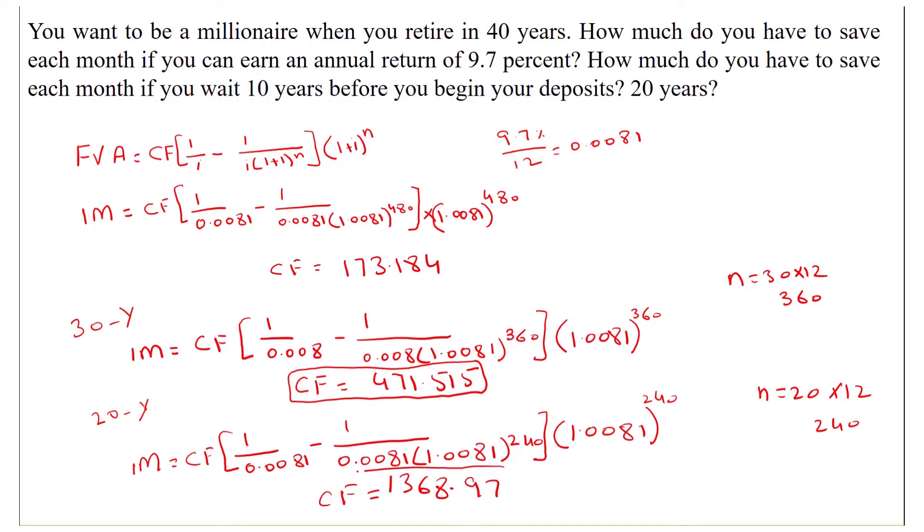So this will be the saving that we will deposit into our bank account to have 1 million in our account after 40 years, if we start deposits after 20 years. So this will be the saving that we will deposit to our bank account.